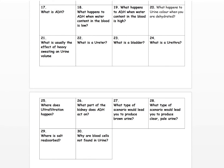Question twenty-six: what part of the kidney does ADH act on? The collecting duct. Question twenty-seven: what type of scenario would lead you to produce brown urine? Heavy exercise on a hot day would result in heavy reabsorption of water, producing a low volume of highly concentrated urine in terms of things like urea. Question twenty-eight: what type of scenario would lead you to produce clear pale urine? Over-consumption of water — over-hydrating. Perhaps drinking far more than you needed to at halftime in a sports game, resulting in very little reabsorption, a large urine output, and a very low concentration of urea in the urine itself.